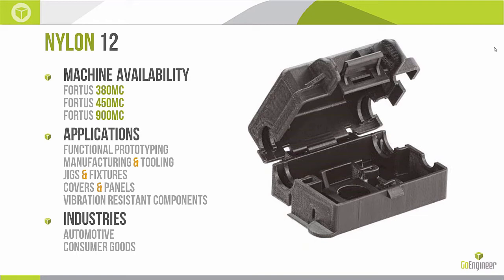Nylon 12 runs on the entire production Fortus line: starting with the Fortus 380 and its predecessor the 360, the high-heat 400 series machines including the 450 and its predecessor the 400, and the flagship Fortus 900. All of these are capable of printing in Nylon 12. Best-fit applications are functional prototyping as number one, manufacturing and tooling as number two, shop floor or assembly line replacement parts, jigs and fixtures, and anything that's going to be roughed up or dropped on concrete.